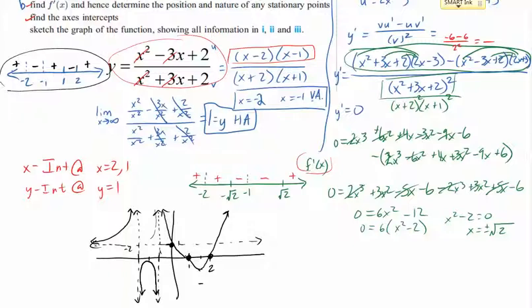We've put together everything we could possibly know about derivatives, sign diagrams, and rational functions, and we've been able to draw a fairly good sketch of the graph. If you wanted more detail, you could plug in the x-values of the stationary points — where we have a minimum and a maximum — into the original function to find the exact y-values. Hopefully this is helpful as you go deal with your homework. Good luck.